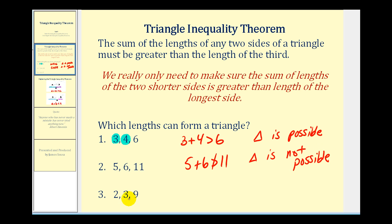And for our last example, the two shorter sides are two and three. Be careful, some textbooks don't always list the two shorter sides first. So, is two plus three greater than nine? Of course, that's not true. So, again, a triangle is not possible.